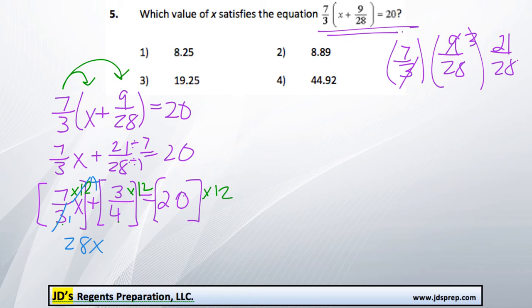And then that becomes a 1, the 12 would become a 3. So it's plus 9. And 20 times 12 is 240.